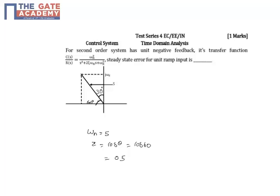From the closed loop transfer function we can determine the open loop transfer function intuitively. So G(s) is equal to omega_n squared divided by (s squared plus 2·zeta·omega_n·s). You can verify this by applying the standard formula for the closed loop transfer function with this open loop transfer function.